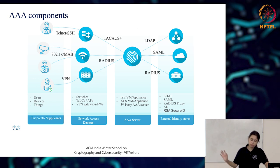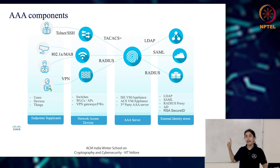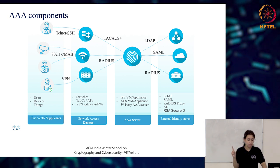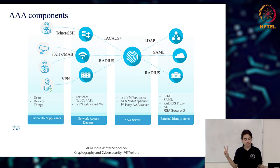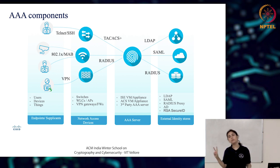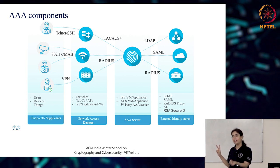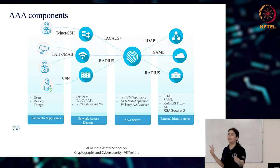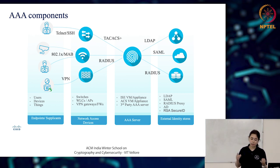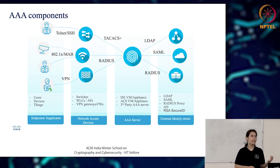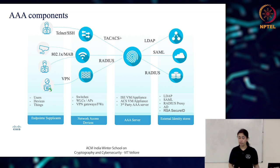To give an overview of AAA components: the first term is endpoints, also called supplicants. They're called supplicants because they are supplying the credentials — supplying information to get authenticated or authorized into the network. Endpoints or supplicants can be users, devices, printers, IP phones, cameras — anything can be an endpoint or a supplicant.